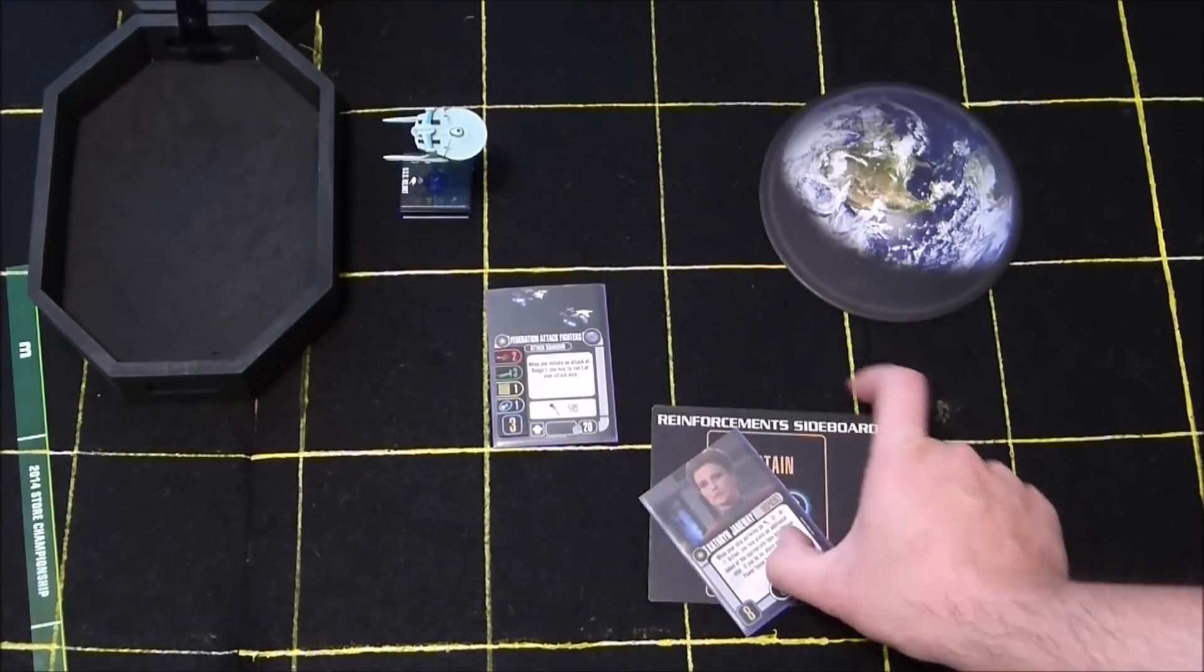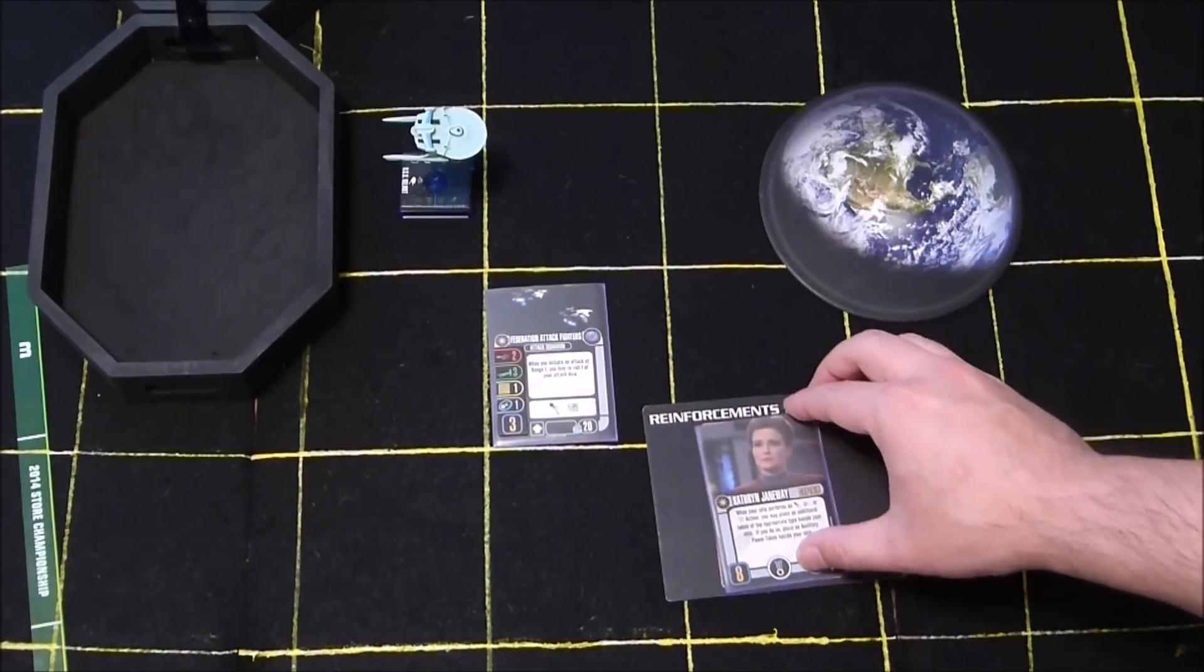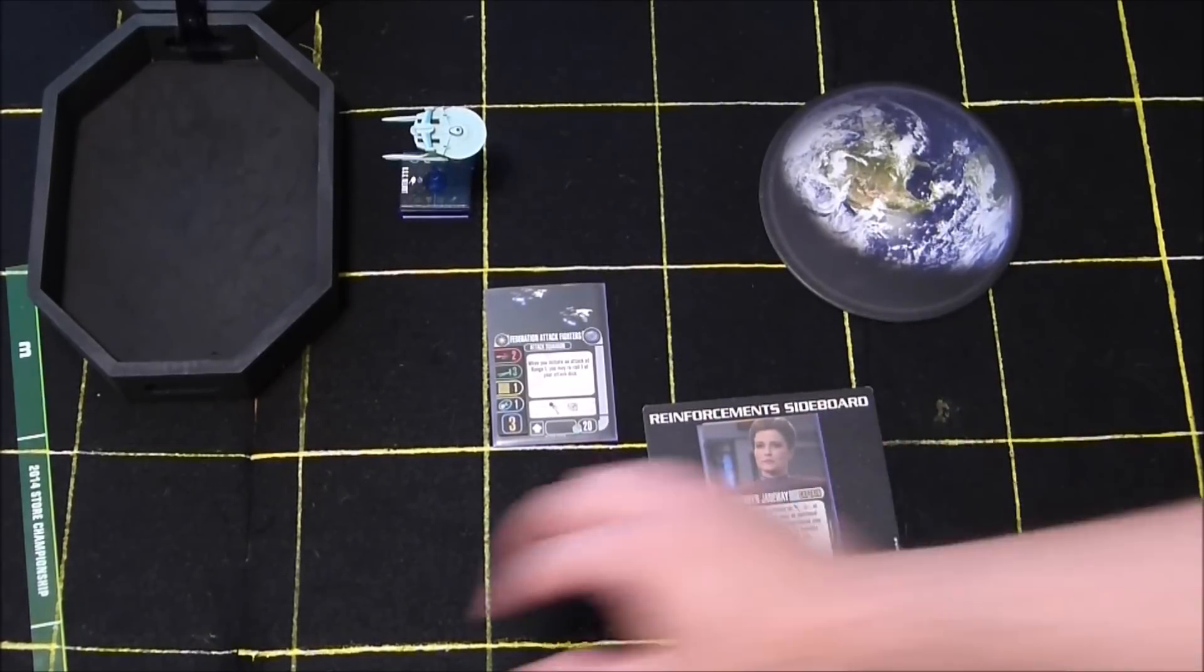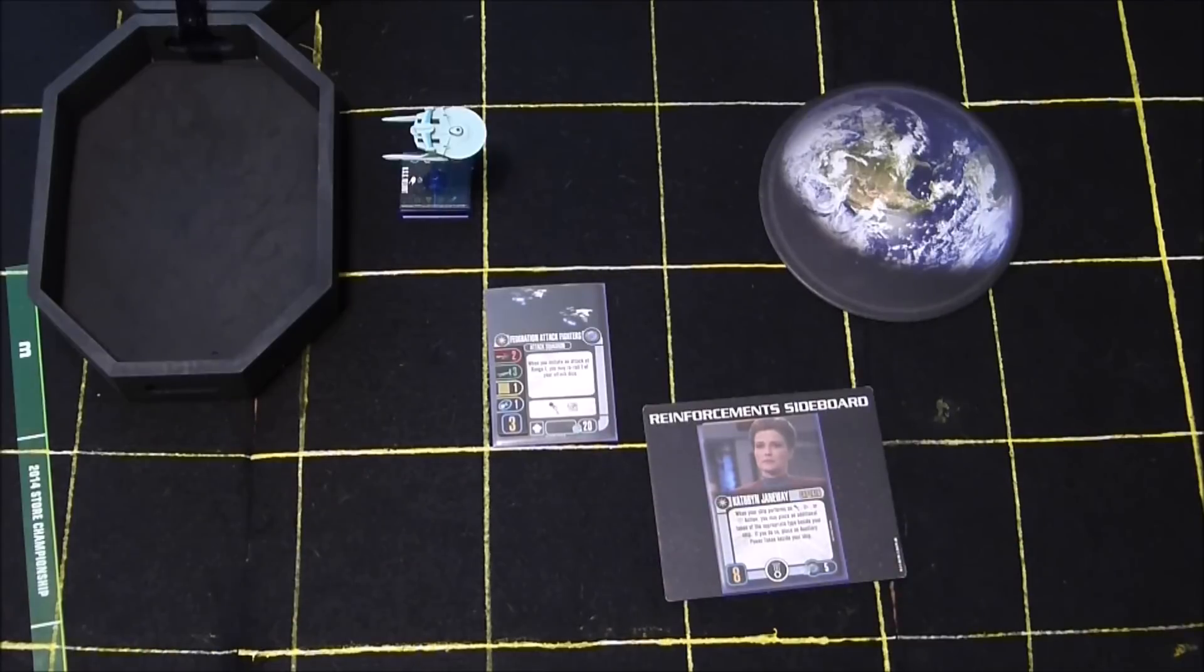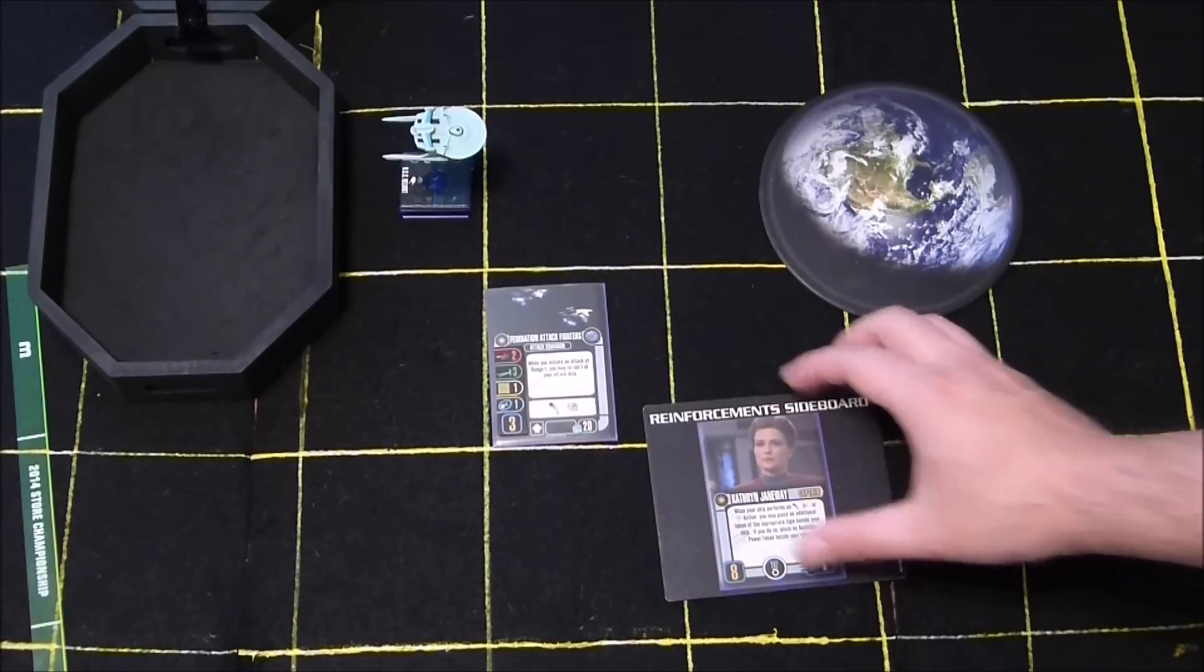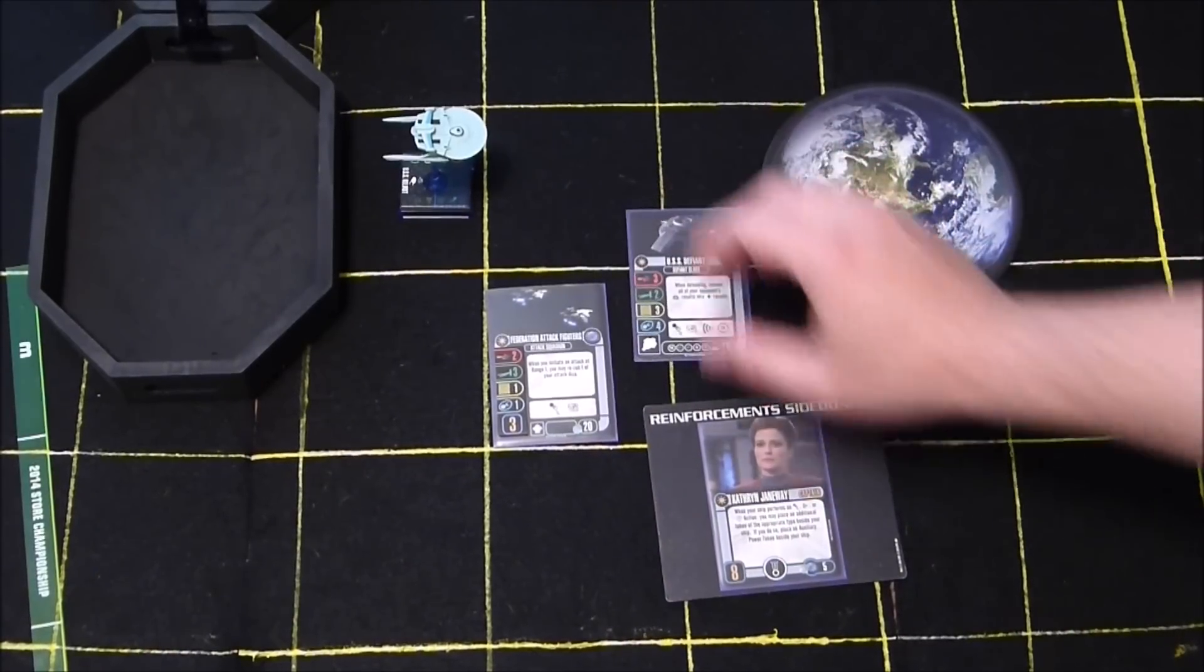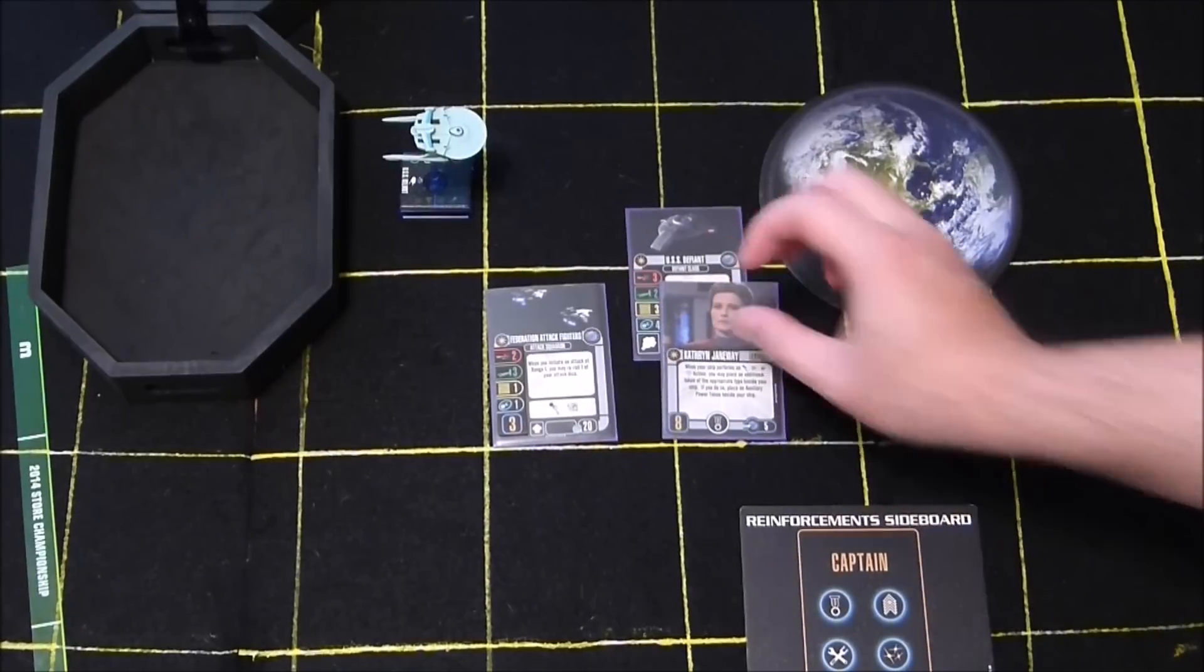If you are using the reinforcement sideboard, any captain on the sideboard is not transported down to the planet for the captain's battle. They also may not be used to replace a captain that has been beamed down to the captain's battle until after the captain's battle has taken place, at which point the sideboard may be used as normal.